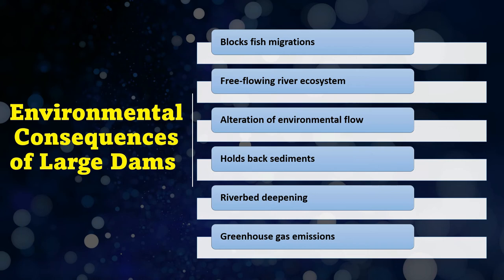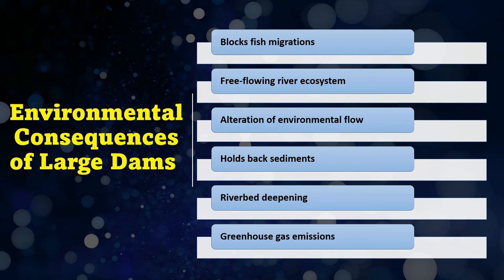In aggregate, damming rivers also impacts processes in the broader biosphere. Dams, most relevantly those in the tropics, are significant contributors to greenhouse gases. When organic material decomposes under anaerobic conditions, incomplete decomposition leads to the generation of greenhouse gases like methane. A recent study placed global greenhouse gas emissions from reservoirs on par with the aviation industry — about four percent of human-caused greenhouse gases. Emissions from reservoirs are much higher compared to other ecosystems.